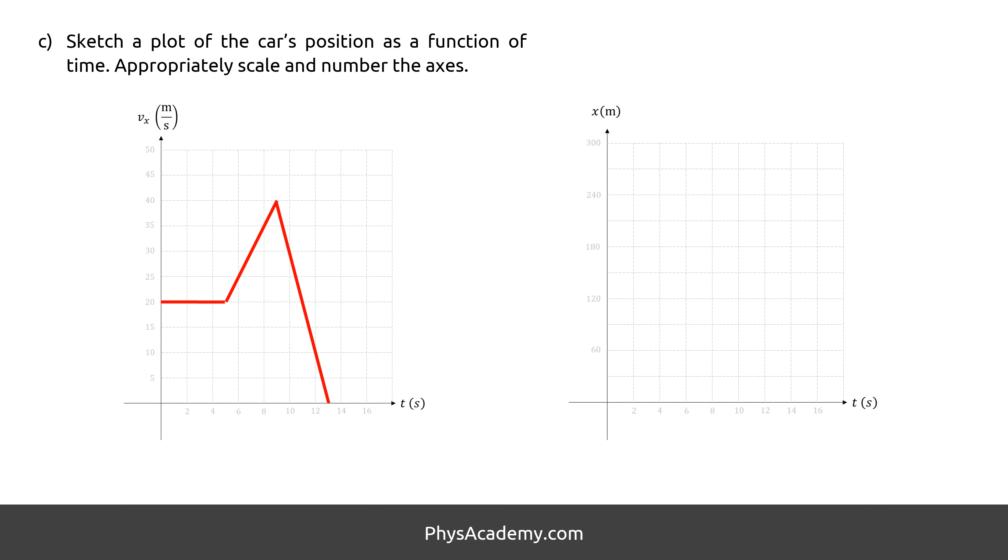Now that we know the exact displacement of each section, generating a displacement versus time plot from the velocity versus time is much easier. The first part of velocity versus time has no slope, therefore, it is a straight line with a constant positive slope on displacement versus time, like a neutral face emoji. The second part has a positive slope and looks like a smiling emoji. The third part has a negative slope and looks like a sad emoji.